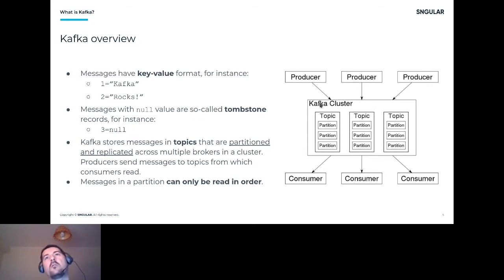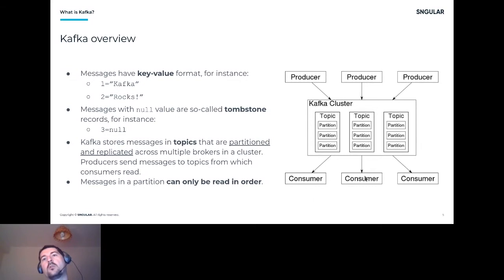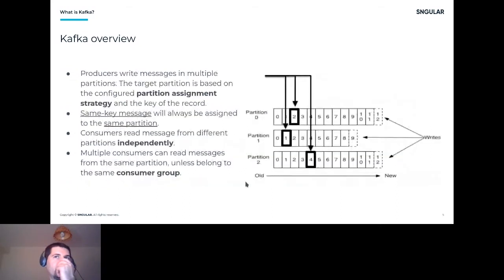In this diagram, closer to what you usually see when creating a Kafka application, we have three producers reading from a number of topics. Every topic has a number of partitions across which data is distributed. On the consumer side, a consumer can read from one or more topics and then do whatever transformation is needed with the data.